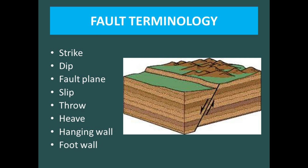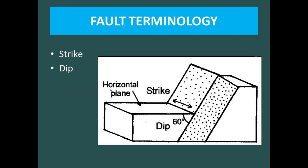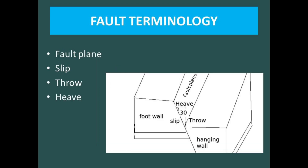Strike is simply the direction in which the rock bed extends. The other definition is the direction of the line formed by the intersection of the bedding plane with the horizontal plane. Dip is the inclination angle at which the rock bed makes with the horizontal plane.